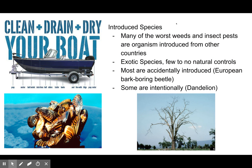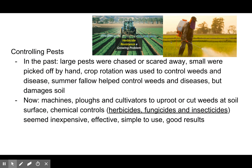Introduced species: many of the worst weeds and insect pests are organisms introduced from other countries — exotic species with few to no natural controls. Most are accidentally introduced, like the European bark boring beetle, but some are intentional, like the dandelion.